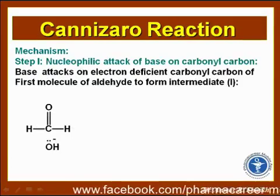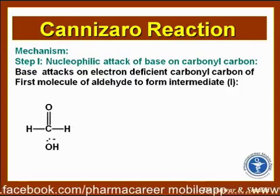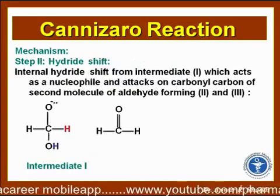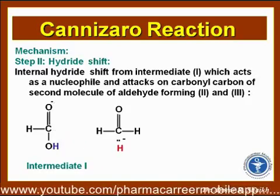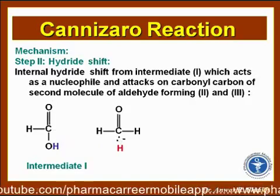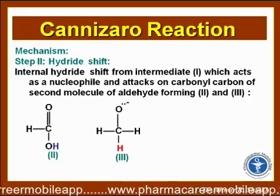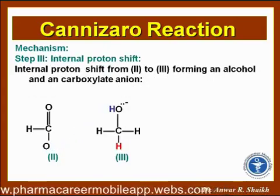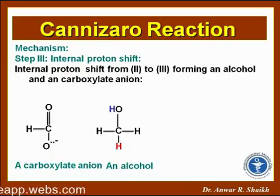Let us see the animated mechanism. Here, nucleophilic attack of the base on the carbonyl carbon of the first molecule of aldehyde forms intermediate 1. From intermediate 1, there is a hydride transfer which acts nucleophilically on the carbonyl carbon of the second molecule of aldehyde, forming the third intermediate. Step 3: the internal proton shift from the second to the third intermediate forms a carboxylate anion and an alcohol — that is the Cannizzaro reaction.